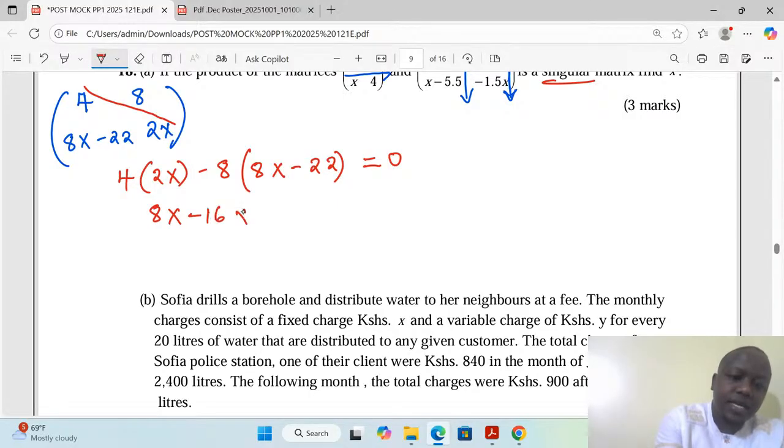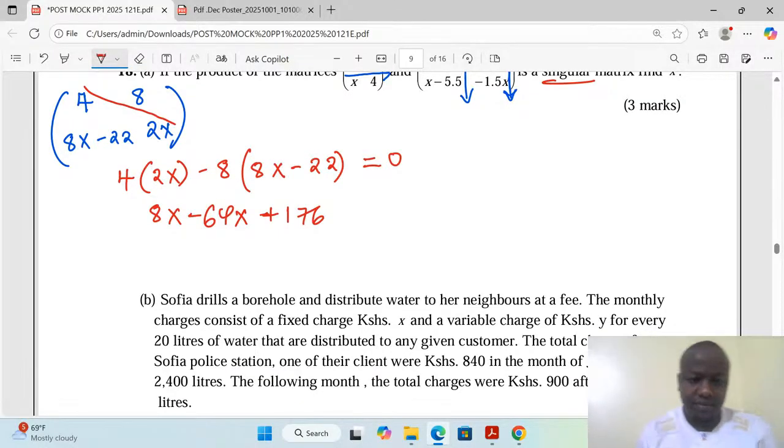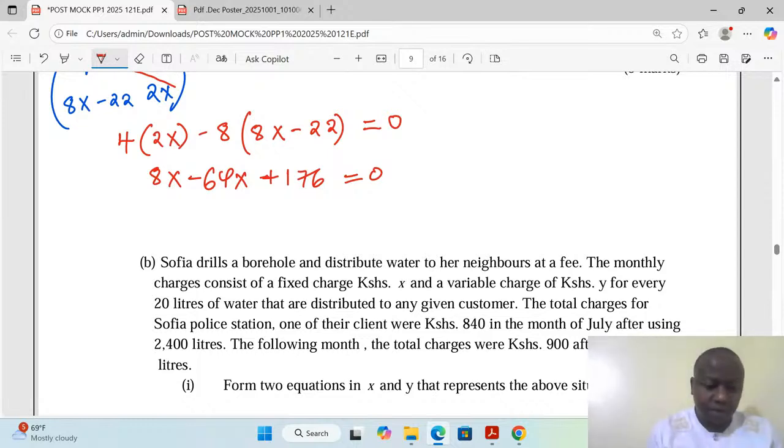We can now open here. See that we have 8x minus, when we take 22 times 8 it becomes 176, which is positive. This is supposed to be negative 64x, and positive 8x gives us negative 56x. Then this equals to zero. We can group some terms here and say negative 56x plus 176 equals to zero.